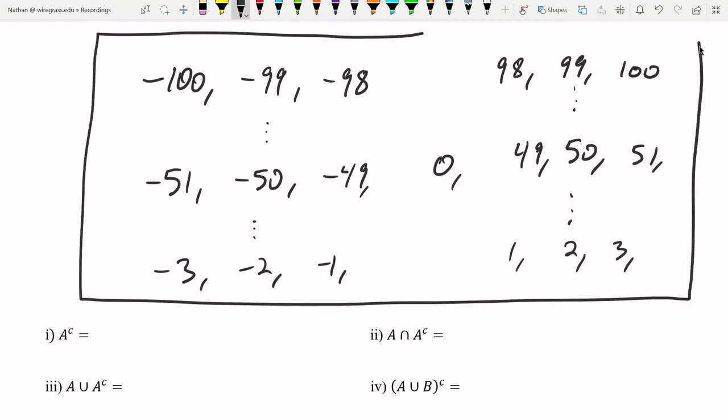And this is our universe set, typically I'm going to write that as a box and put U on the outside. And once again, this is just the numbers negative 100 to 100. I wrote this in a special way so that the visualization is a little bit clearer.